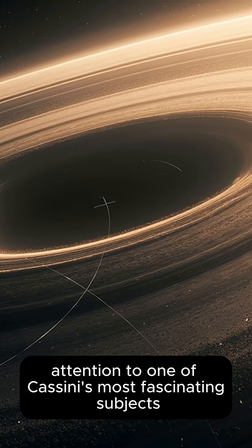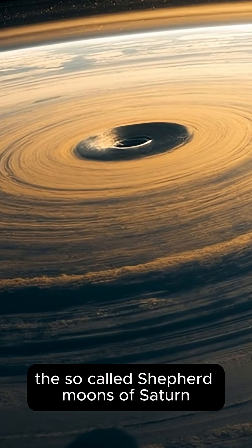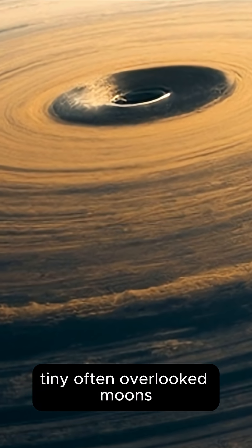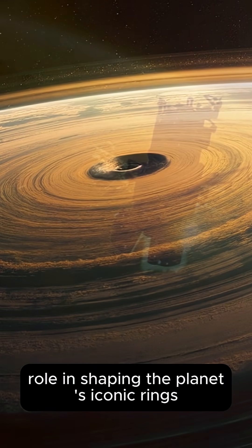Let's now turn our attention to one of Cassini's most fascinating subjects, the so-called shepherd moons of Saturn—tiny, often overlooked moons that play an outsized role in shaping the planet's iconic rings.